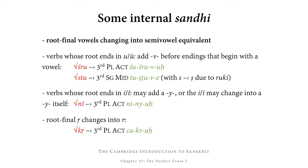Verbs whose root ends in short i or long ī may either add a y — the semivowel equivalent of i or ī — or the i/ī may change into y itself. For example, of nī, we have the third person plural active form ninyuḥ — ni is the reduplicative syllable, ni is the root in zero grade, and yuḥ is the ending. The ī at the end of nī has changed into its semivowel equivalent y, giving ninyuḥ. An alternative form would be ninyuḥ.